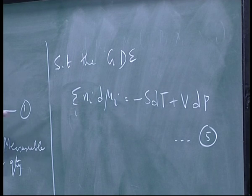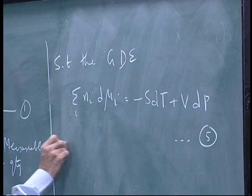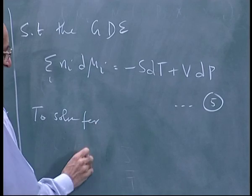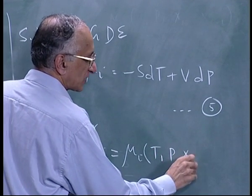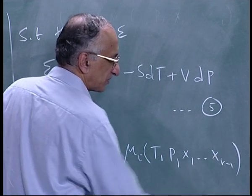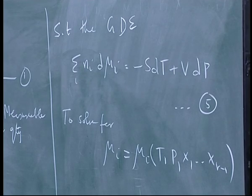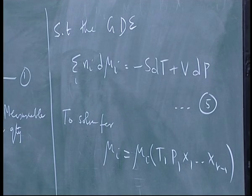The aim is to solve for μᵢ, which as an intensive variable can only be a function of T, P, and x₁ through x_{r−1} — there are only r−1 independent composition variables. If I give you μᵢ as a function of these, the rest of thermodynamics is trivial. It is because we do not know this that we must make extensive measurements and go through complicated maneuvers to predict phase and reaction equilibrium.